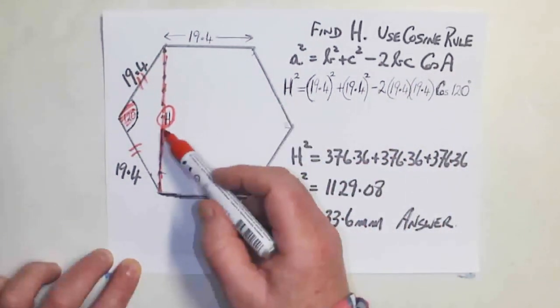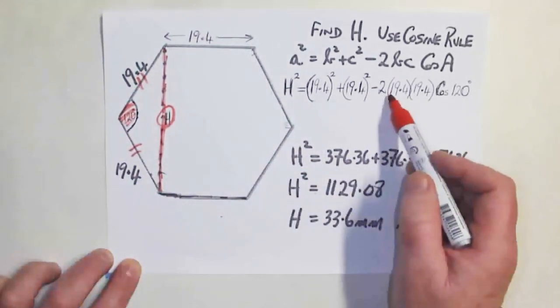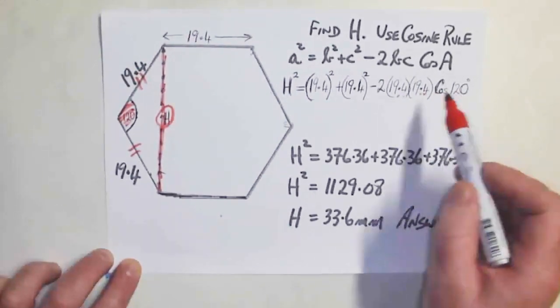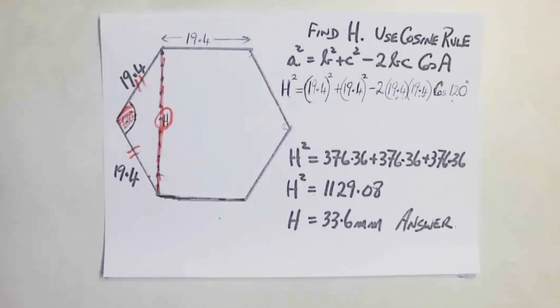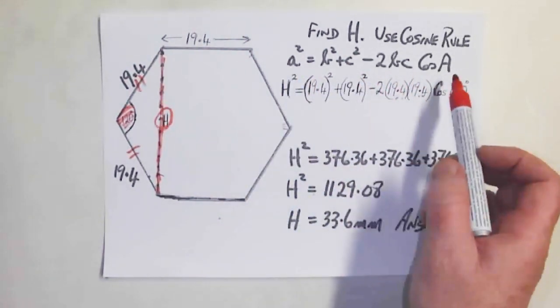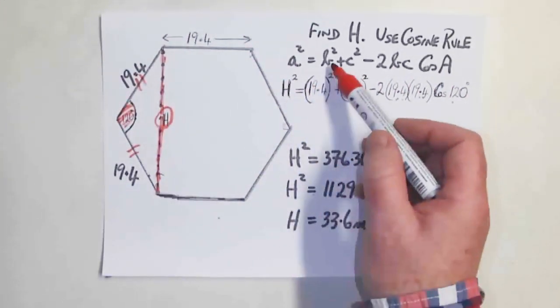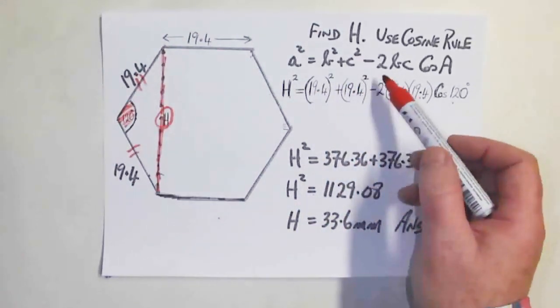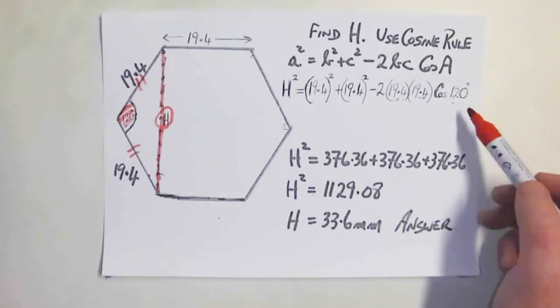So H squared, which is this one here, is equal to this one squared plus this one squared minus two times 19.4 by 19.4 by the cosine of 120. If you look at it, it looks kind of scary for a moment because you've got this cosine rule, which is off-putting if you're not totally familiar with it. But then I know that this is H. So it's H squared. 19.4 squared plus 19.4 squared minus 2 times 19.4 by 19.4 by the cosine of 120.